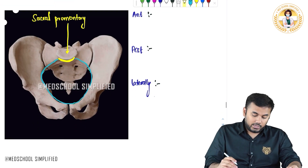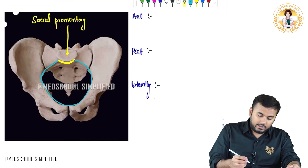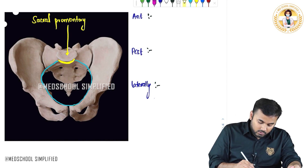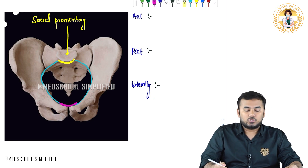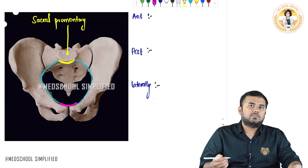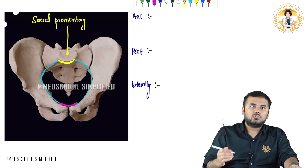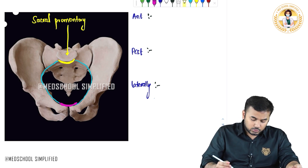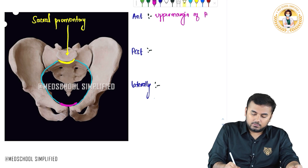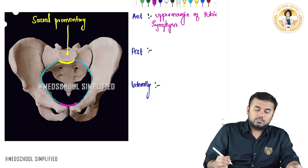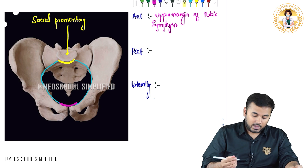Anteriorly, from here all the way to here, this part is the superior surface of the pubic bones — that is, the upper margin of the pubic bone. So anteriorly we have the upper margin of the pubic symphysis.